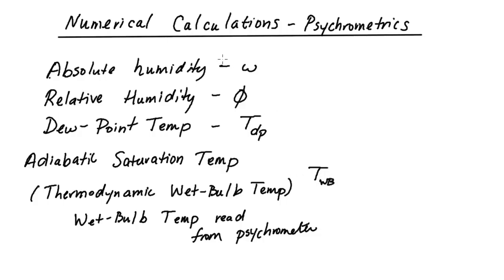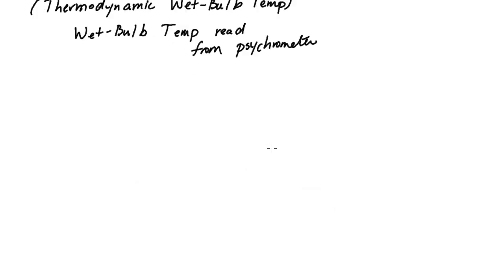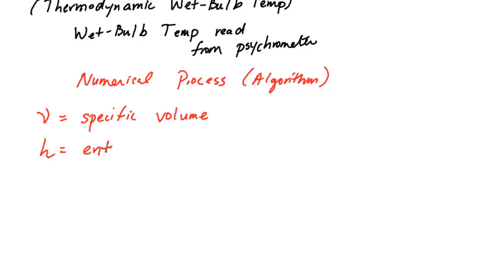But we have equations for a few of these in certain cases, but what we want is a numerical process or algorithm that can give us all of these, along with things like specific volume, enthalpy, partial pressures, and possibly mu degree of saturation, a term we haven't covered yet, but we will in a second.